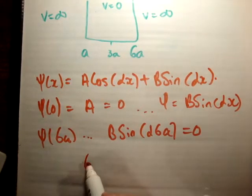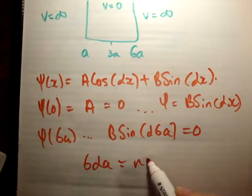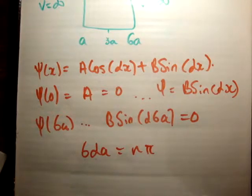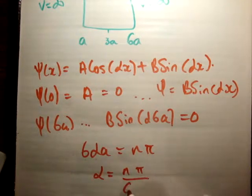That means that 6αa is equal to nπ, because sine is equal to 0 for integer values of π. Therefore, we get that α is equal to nπ over 6a.